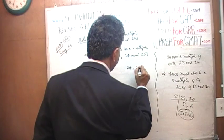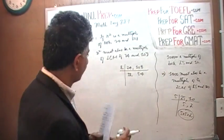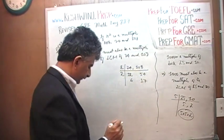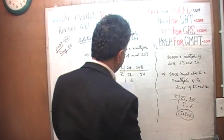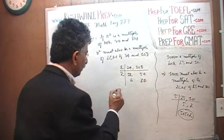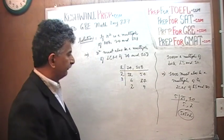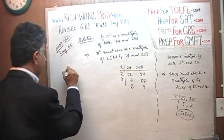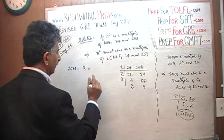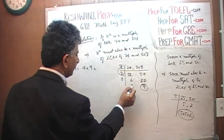Let's find the LCM of 24 and 108 by dividing by prime factors. Dividing by 2: we get 12 and 54. Dividing by 2 again: we get 6 and 27. Dividing by 3: we get 2 and 9. So the least common multiple is 8 times 27, which we can express as 4 times 9 times 6.